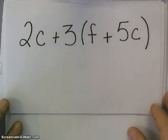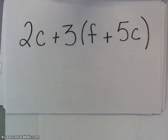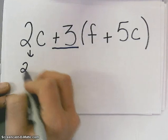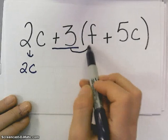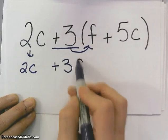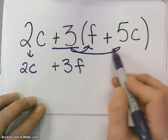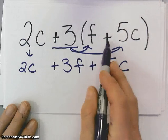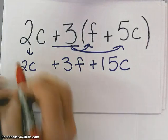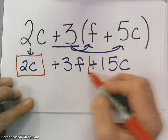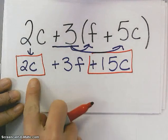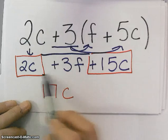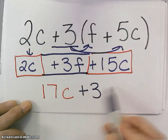Our next one, we have 2c plus 3 times the quantity f plus 5c. So, once again, we need to distribute our 3 first. So, I just drop my 2c down. I can't do anything with him quite yet. And so, I have 3 times f is plus 3f. And then, I have 3 times 5c is plus 15c. And this is a plus because this is a plus right there. And then, I combine my like terms. Well, I have a positive 2c and I have plus 15c. So, 2 plus 15 is 17c. And then, my 3f is just a positive 3f. So, I cannot combine him with anybody else.